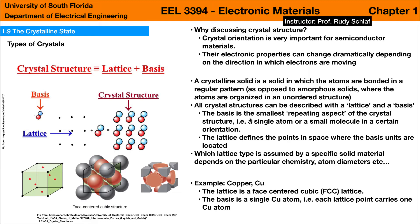You may wonder why I discuss crystal structure in a course about the electronic properties of materials. It turns out that the crystal orientation is very important for semiconductor materials — their electronic properties depend a lot on the direction into which electrons move as they travel through the crystal. A crystalline solid is a solid in which the atoms are bonded in a regular pattern, making it different from an amorphous solid where there is a more chaotic and unordered structure.